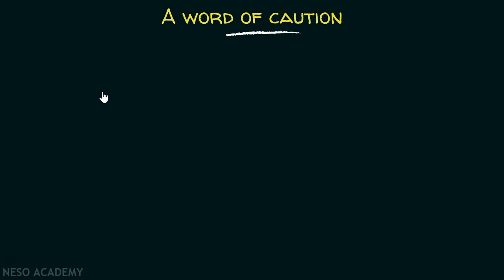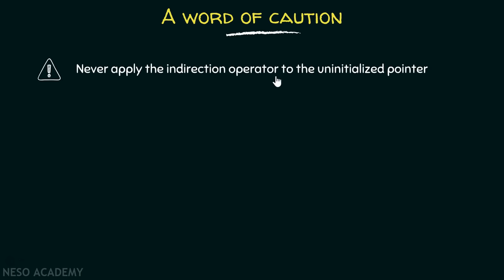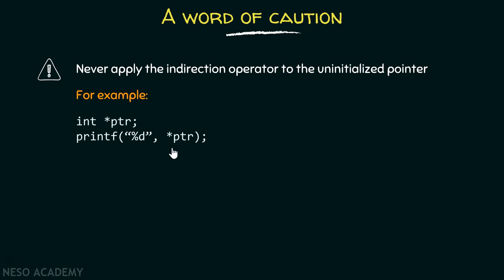An important word of caution: never apply the indirection operator to an uninitialized pointer. It is very important to initialize the pointer before applying the indirection operator. If we try to access the content stored at the location pointed by an uninitialized pointer, it is totally illegal. This pointer must point to some valid location before applying the dereference operator; otherwise we are simply applying the dereference operator without initializing it, and we cannot do this.